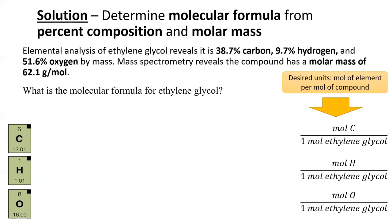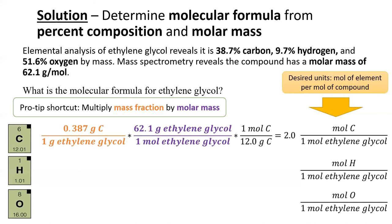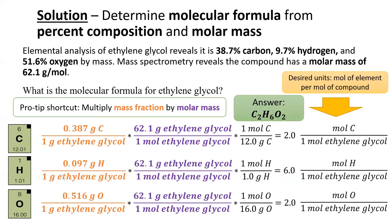Watch what happens when we multiply the mass fraction, in orange, by the molar mass, in purple. We'll get grams of carbon per mole of ethylene glycol. We only need to add one more conversion factor, the molar mass of carbon, in black, to get the number of moles of carbon in one mole of ethylene glycol. If you don't believe me, try crossing out the units here. Apply this same treatment to hydrogen and oxygen, and you'll get your answer, C2H6O2.